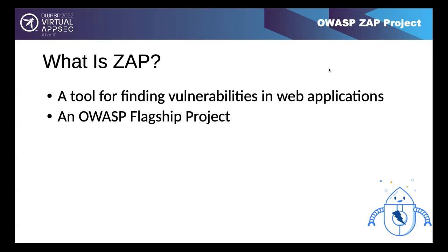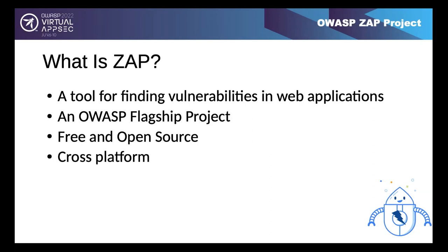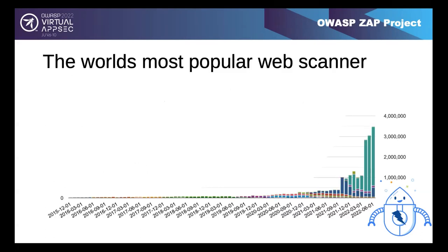ZAP is a flagship OWASP project - these are the most mature projects really recommended for getting started with application security. Like all OWASP projects it's completely free and open source, and cross-platform - written in Java, so if you've got a JVM, ZAP should run on it. It is well-maintained, which Simon emphasizes because many web security tools have come and gone over the years. ZAP has been maintained consistently for the last 12 years and is still going strong.